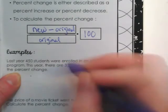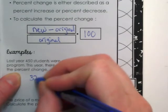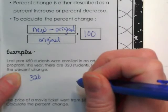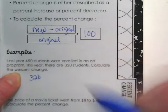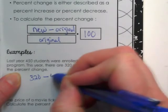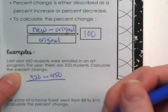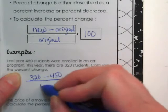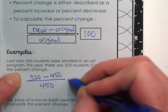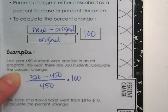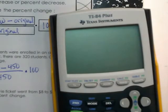Okay, we're going to get a negative number, yes, and that makes sense because it's gone down, hasn't it? Okay, so 320 minus 450 equals negative 130, divided by 450.